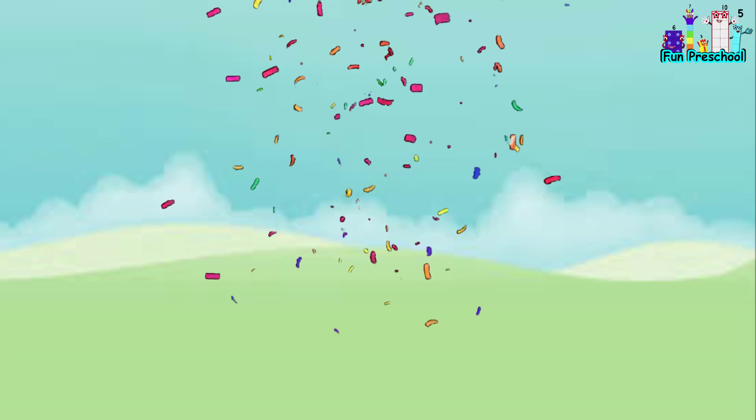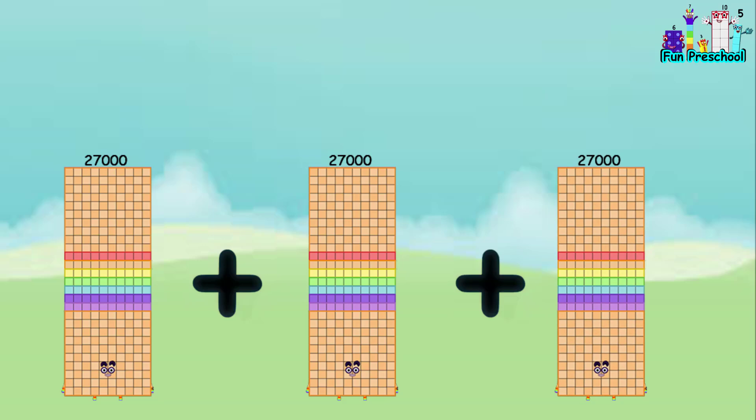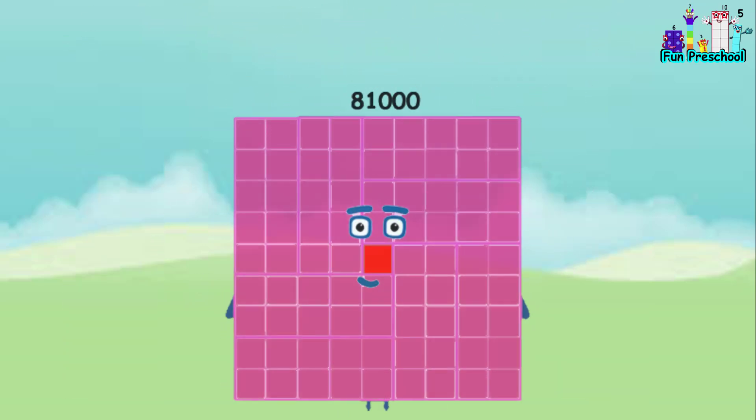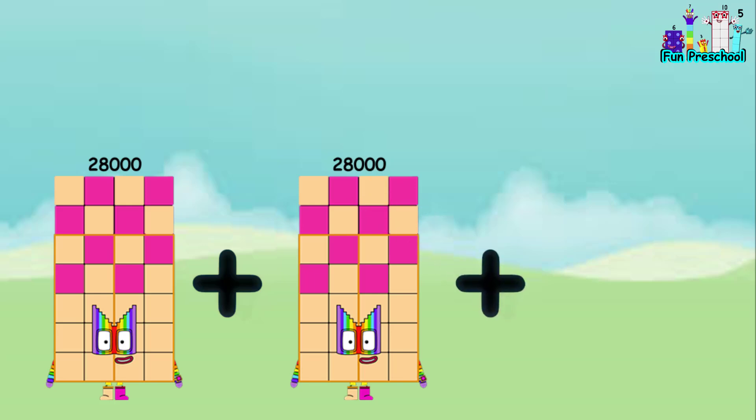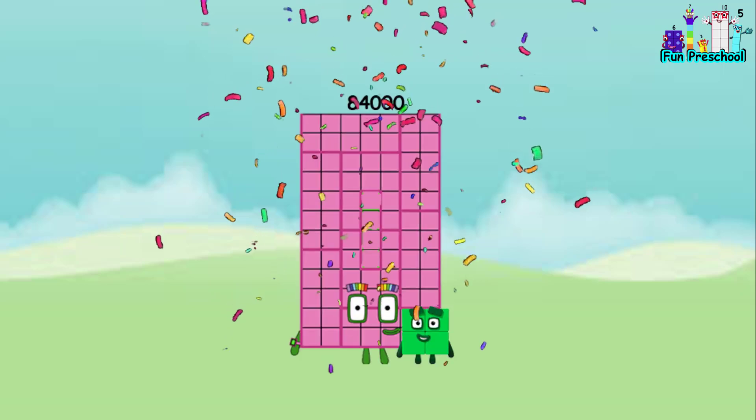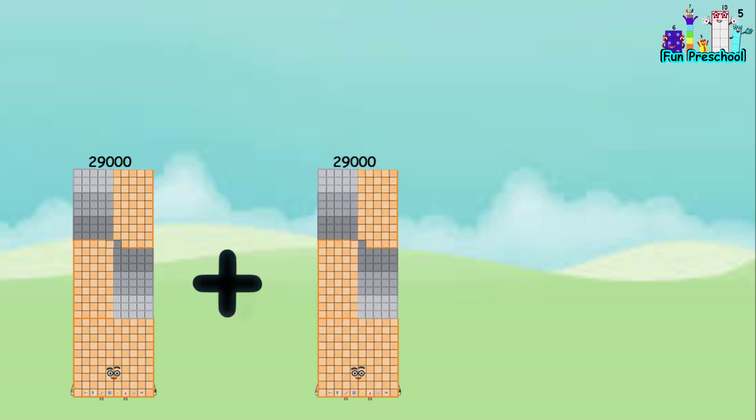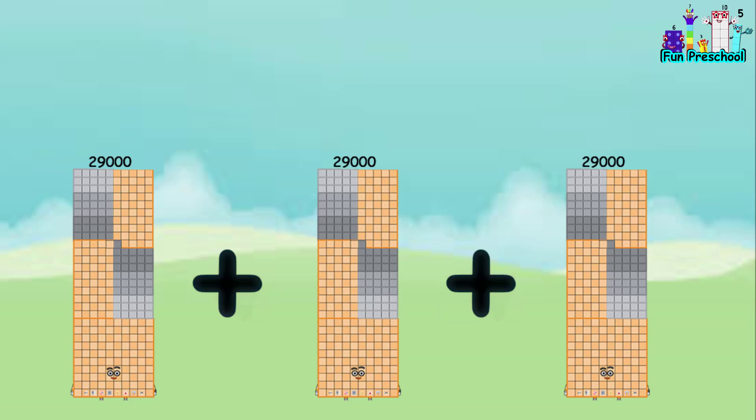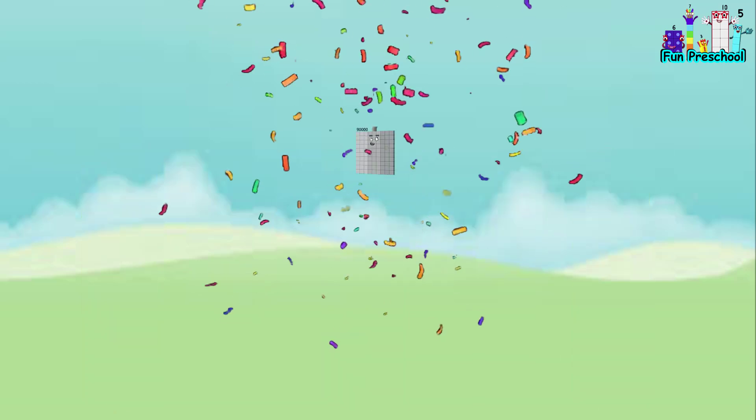equals 78,000. 27,000 plus 27,000 plus 27,000 equals 81,000. 28,000 plus 28,000 plus 28,000 equals 84,000. 29,000 plus 29,000 plus 29,000 equals 87,000. 30,000 plus 30,000 plus 30,000 equals 90,000.